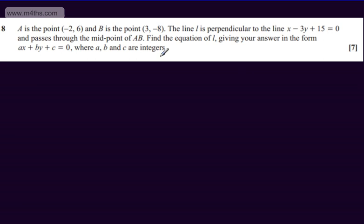This is question number 8. We're told A is the point minus 2 comma 6 and B is the point 3 comma minus 8. We're told the line L is perpendicular to the line x minus 3y plus 15 is equal to 0 and passes through the midpoint of AB. We're asked to find the equation of L given our answer in the form Ax plus By plus C is equal to 0 where A, B and C are integers. The question carries 7 marks.